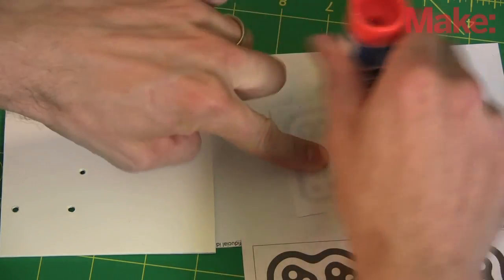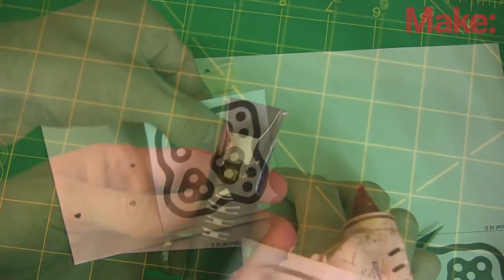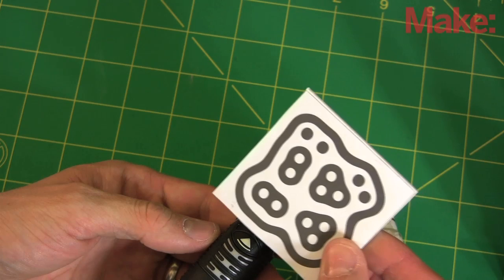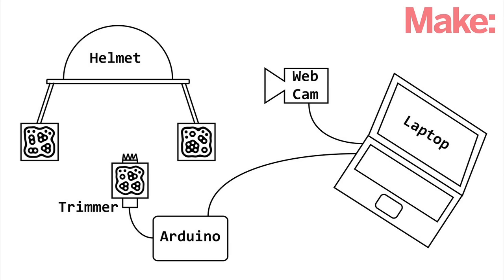I found an awesome library called Reactivision that takes care of all the hard parts recognizing special symbols called fiducial markers. The trimmer will need a marker, as will my head. The Reactivision app and a processing sketch on my laptop will take care of the computer vision, but the laptop will need a way to control the trimmer.